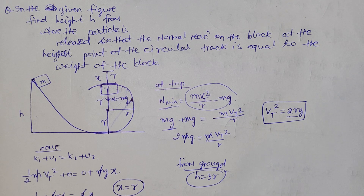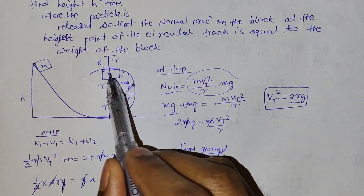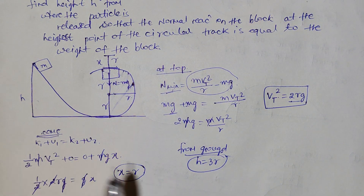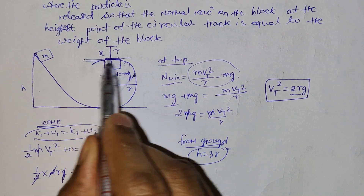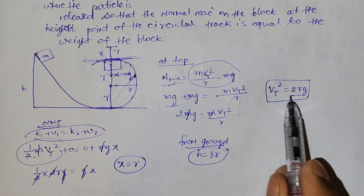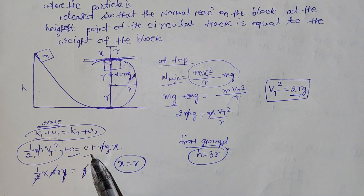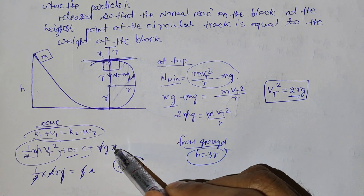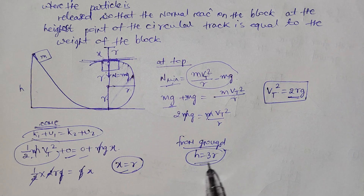Velocity at the top is root(2rg). Now apply conservation of mechanical energy from the starting height to the top. Taking the lowest point as reference: initial KE = (1/2)mv², initial PE = 0, final KE = 0, final PE = mgx. Solving gives x = r, so the total height from which to release is r + 2r = 3r.